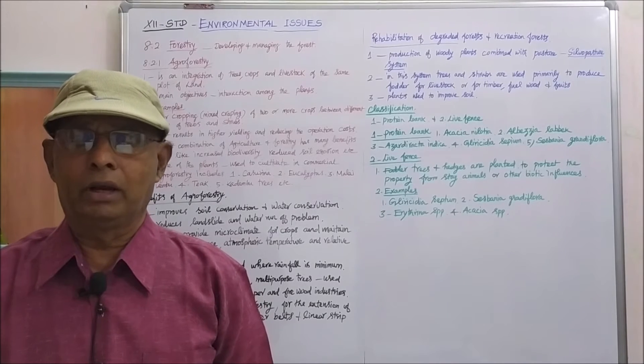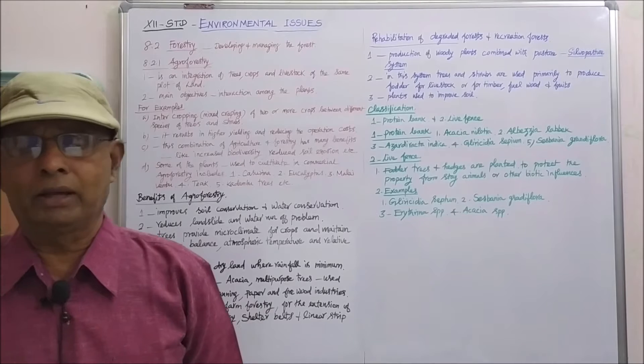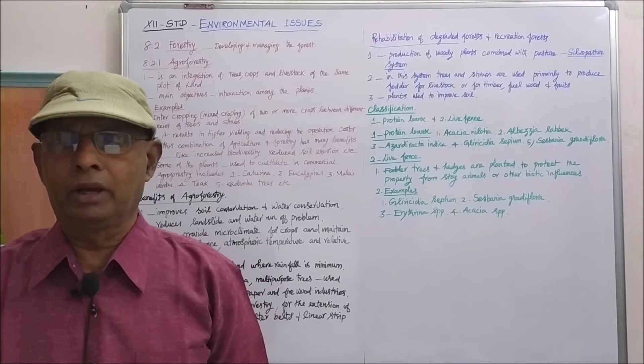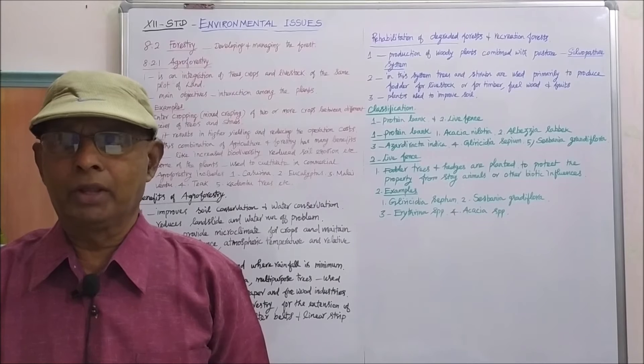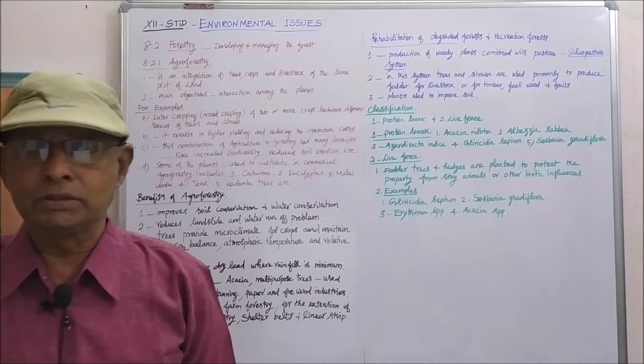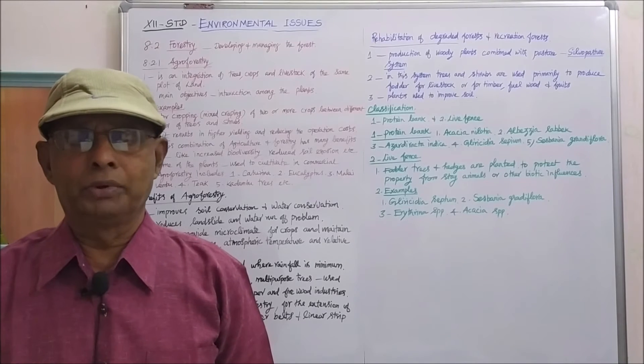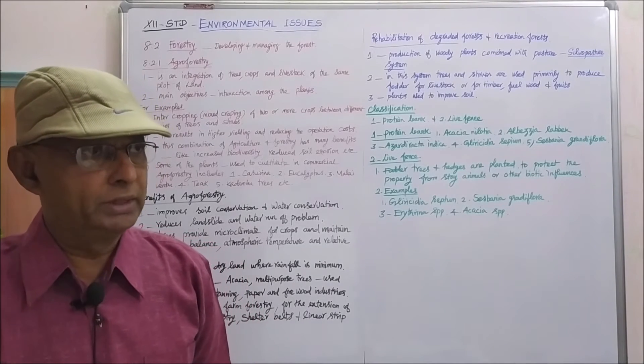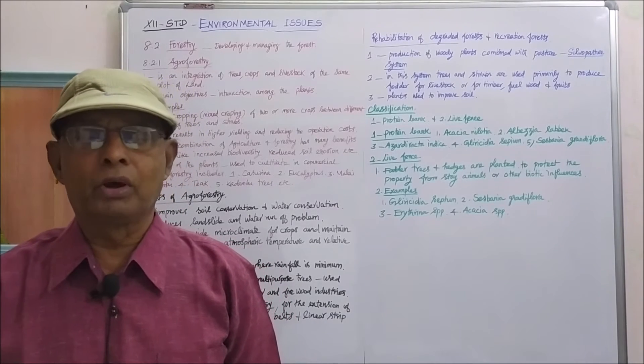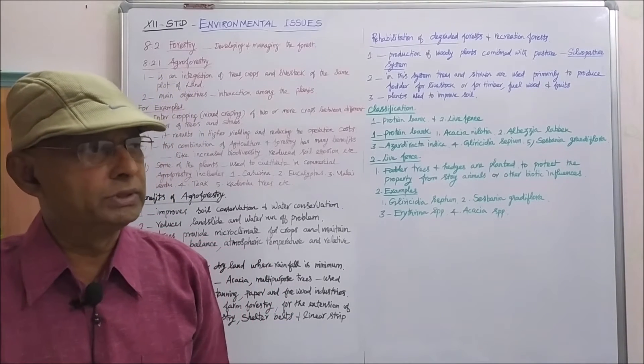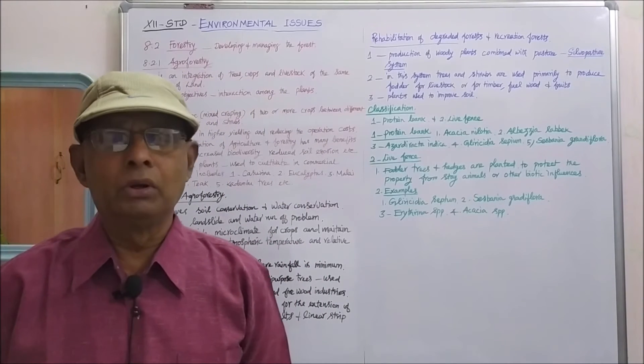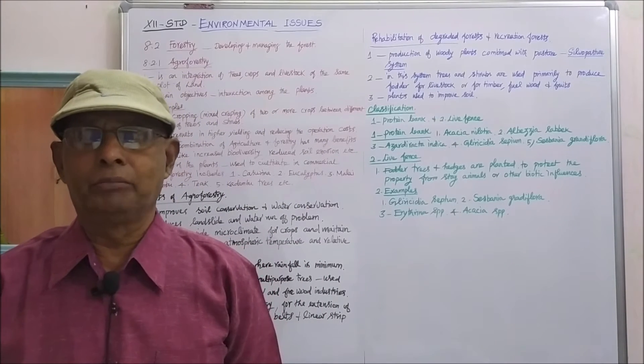For example, acacia nilotica, albizia lebbeck, azadirachta indica, gliricidia sepium, sesbania grandiflora. These are all the plants which are used for protein bank. Protein bank means the plants which contain enormous amount of protein. The plants which store protein content maximum, that is called protein bank plants.